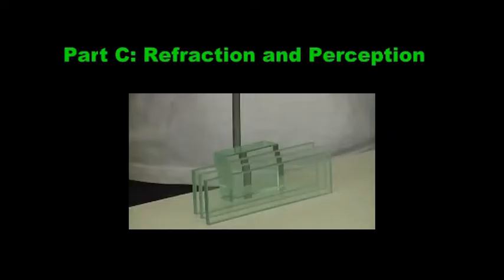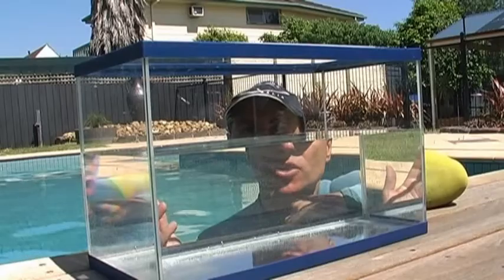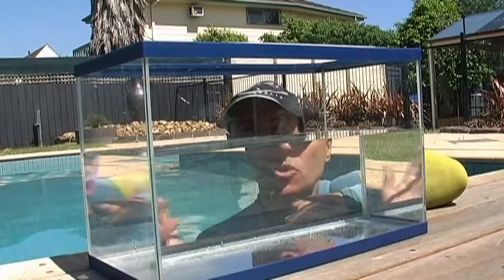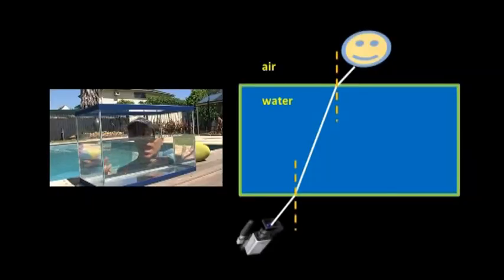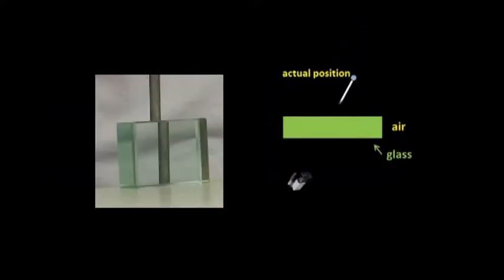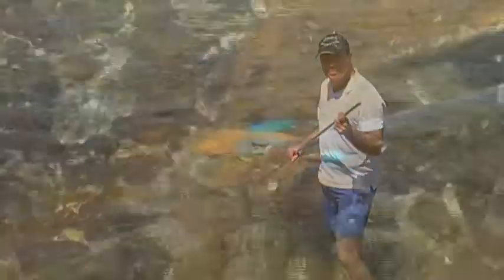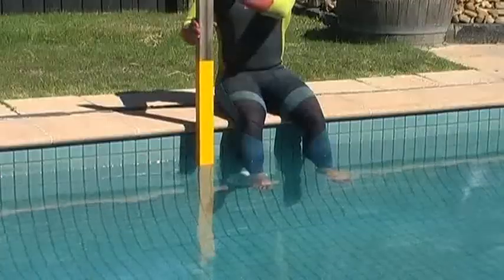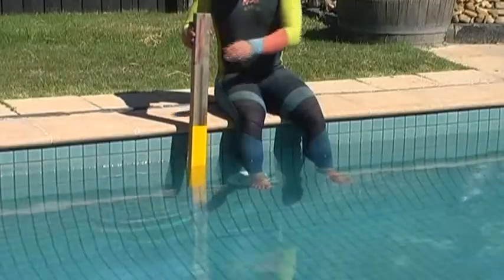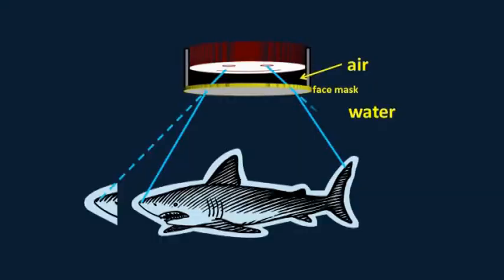In part C, we show students how refraction affects the way we see things. If light changes direction on its way from an object to our eyes, then the object appears to be in a different position to where it really is. We take a look at spearfishing, explain why things appear distorted when they're partially submerged, and take a snorkeler's eye view at the way refraction changes the appearance of things when we see them underwater.